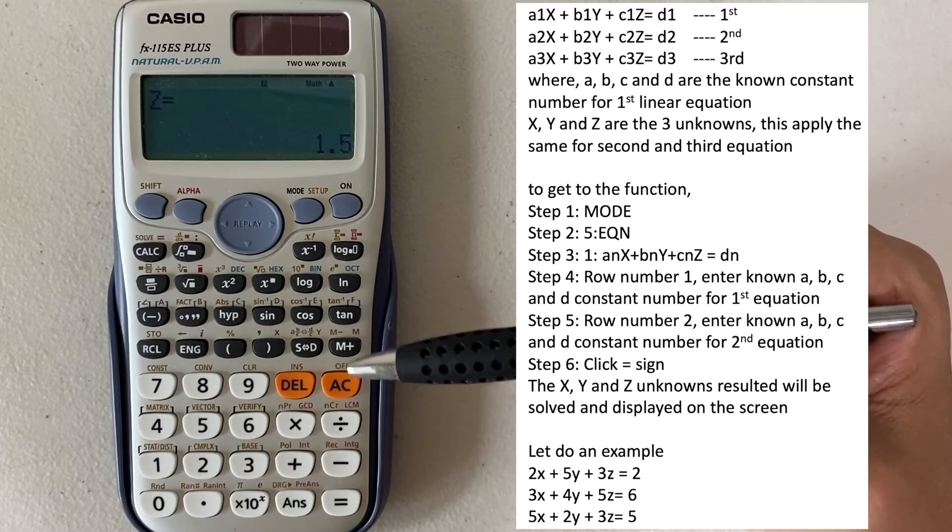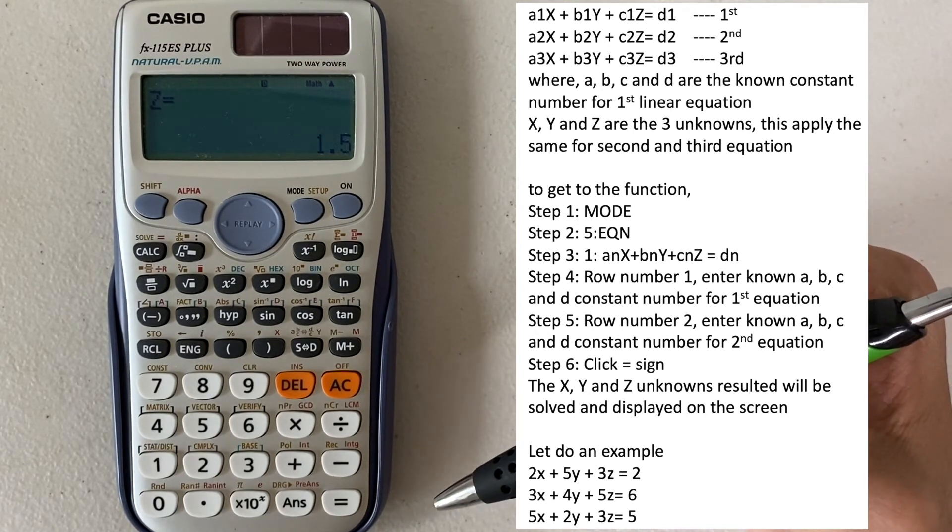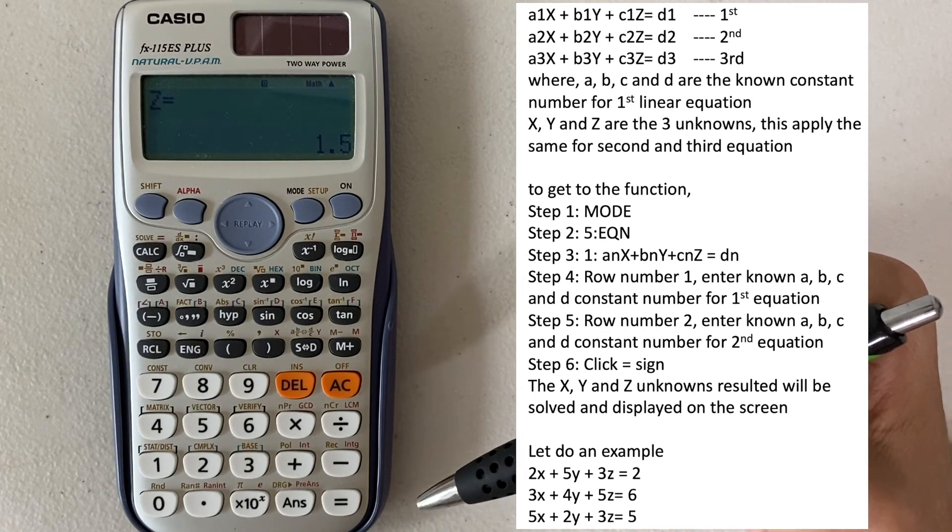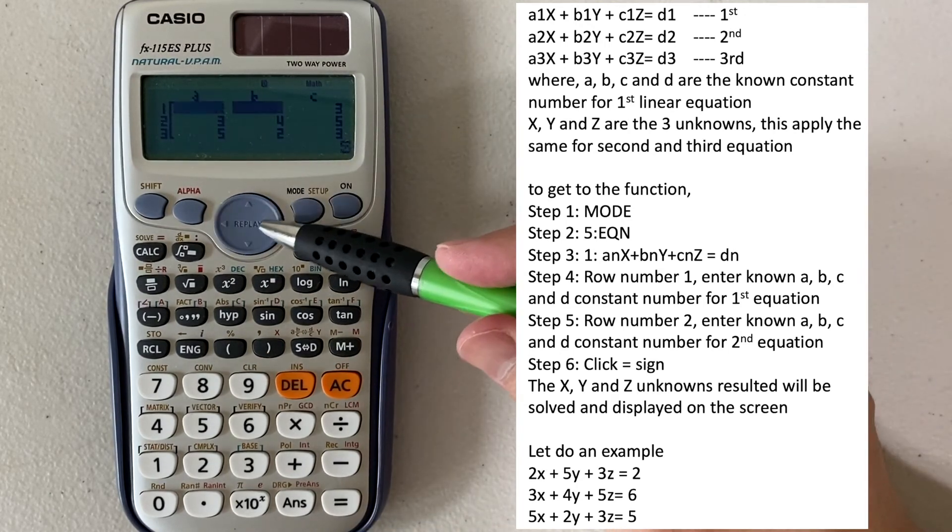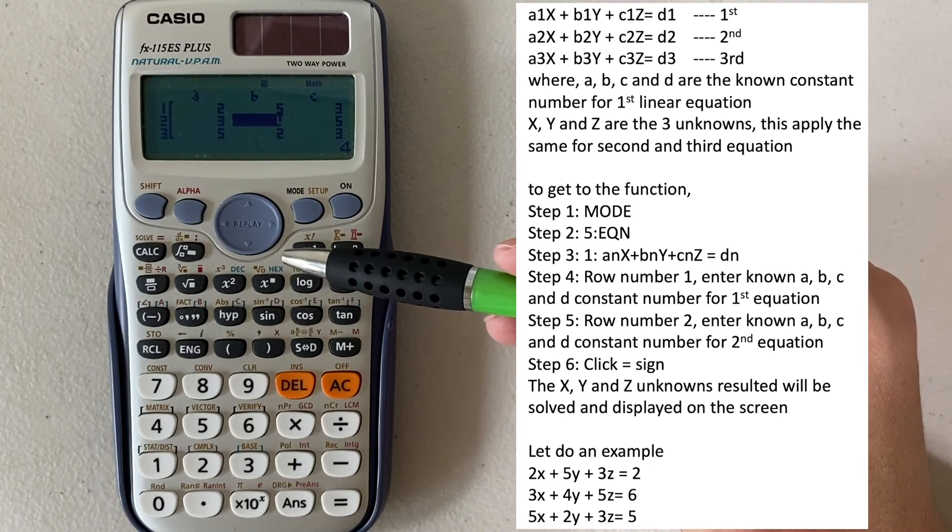So if you plug this X, Y, Z into any of the equations, you should be able to get this D constant. In order to go back, you can click equal again, and here you can make changes to the equation in case you keyed in incorrectly.